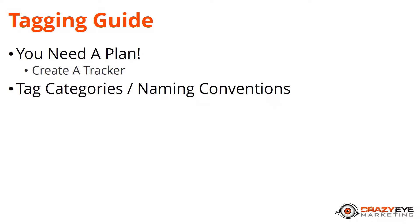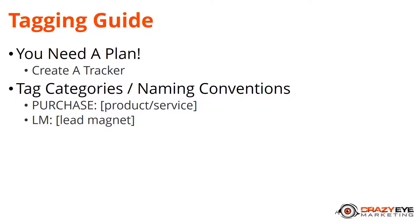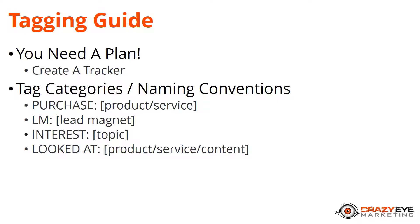I also recommend you create tag categories or specific naming conventions for your tags. Some of the categories I use are: 'Purchase: product or service name', 'LM: lead magnet name', and 'Interest: topic' — so if somebody shows interest in a particular topic you can assign a tag for that. I also have 'Looked At' tags, so if they look at a specific product, service, or piece of content I designate as significant, I can track what they've looked at and send them correspondence based on that.